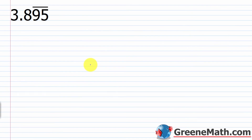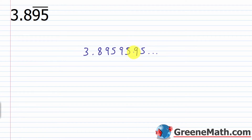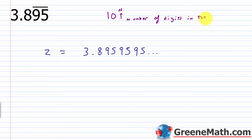Hopefully on this second example you'll get in the flow of things. We have 3.895 where the 9 and 5 repeat forever — so 3.895959595... and so on. Set this equal to a variable; let's use z this time. The next step is to multiply both sides by 10 to the nth power, where n is the number of digits in the repeating string. Here I have two digits, so n equals 2, meaning 10 squared equals 100.